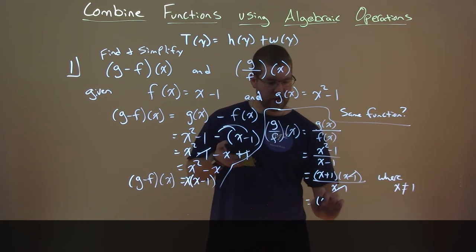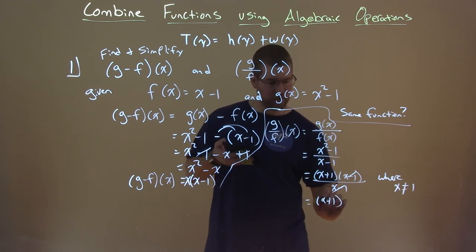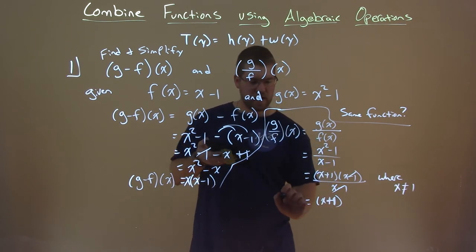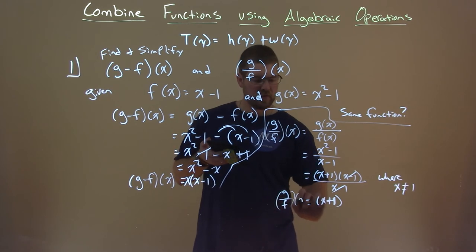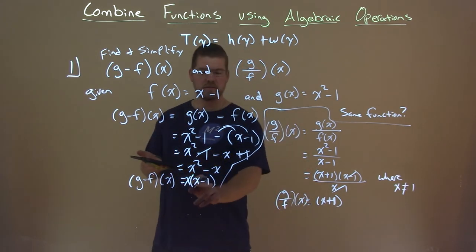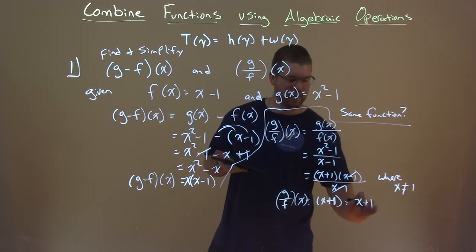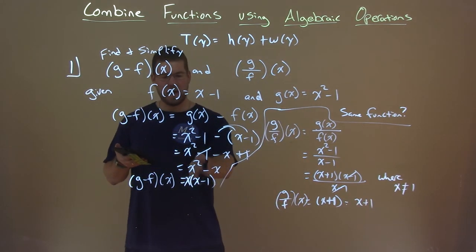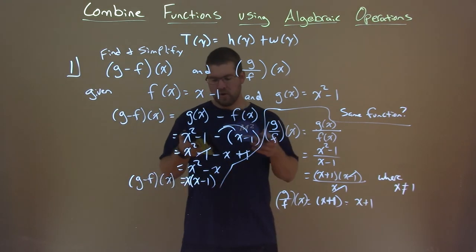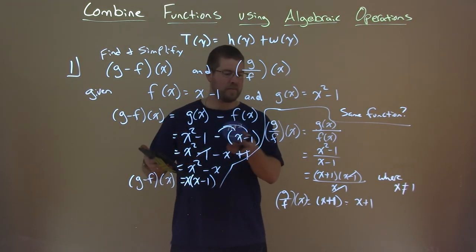So these cancel, and we're left with an x plus one left over, and that is g over f of x. So are these two functions the same? No, they're not. That's x plus one. This is x times x minus one. So they're not the same. Okay? Not the same function.